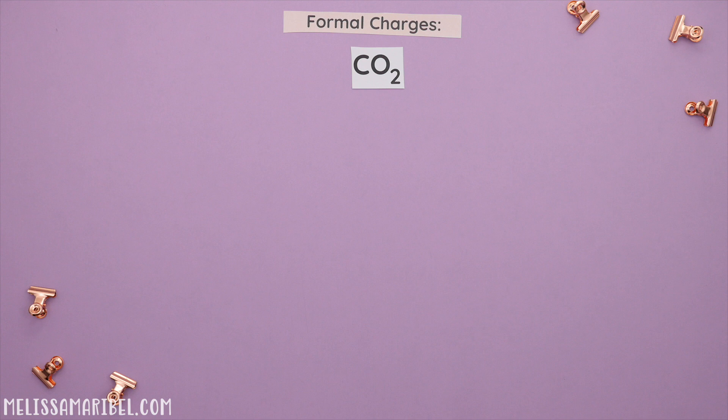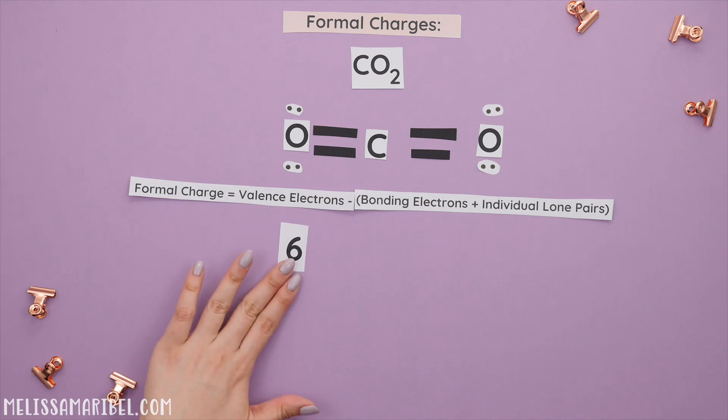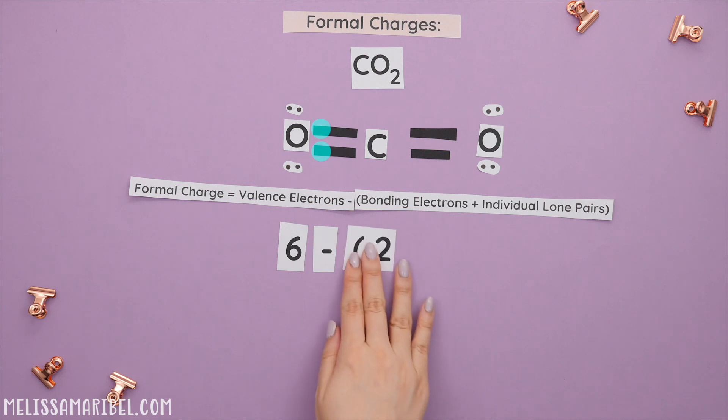Here's a neutral molecule of CO2 and here's the Lewis structure. Let's practice finding formal charges for each atom. Here's our formal charge formula. We'll apply this formula for the oxygen on the left. Start with the typical valence electrons for oxygen which is 6. Next are the bonding electrons. This means the electrons that are found in the bonds that are directly touching that oxygen. So we have one, two bonding electrons.